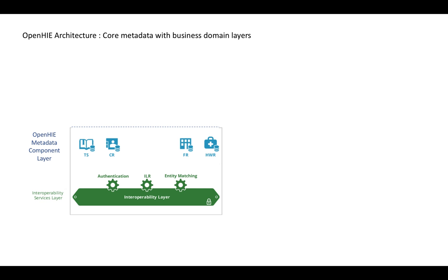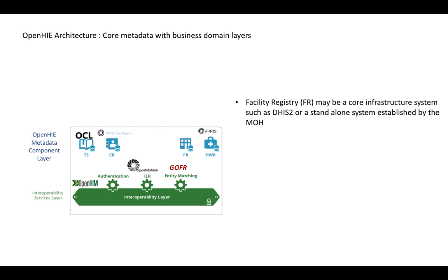These metadata services sit on top of the interoperability layer which controls access, provides authentication, and other data transformation and matching services. There are a number of software tools that can play the roles of these components within the OpenHIE architecture. These are just examples of these tools — there are other ones that can be used.